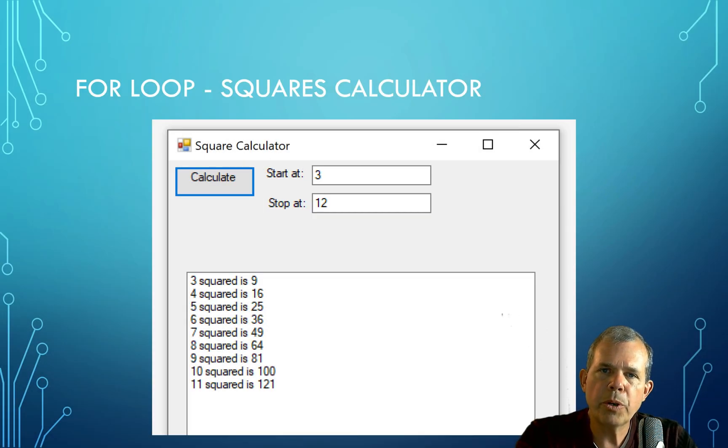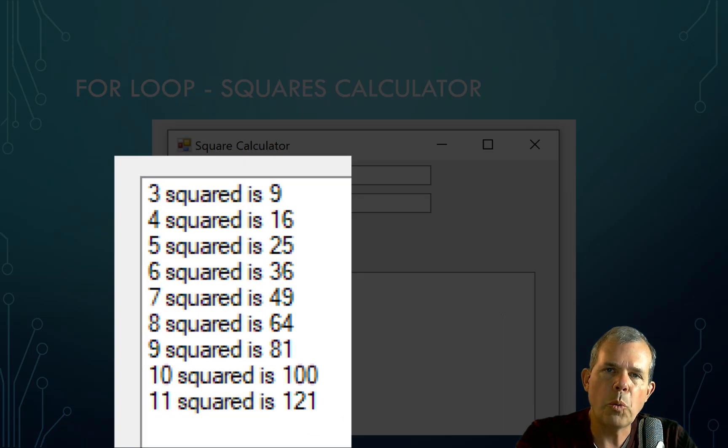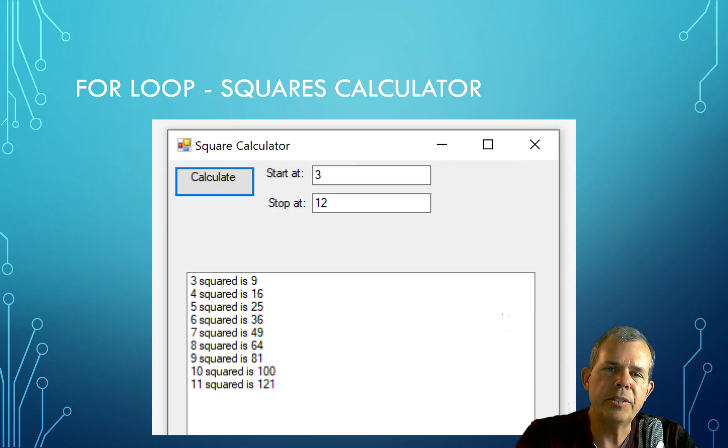And for each of those numbers, we're going to count one by one until we get to the upper limit. And for each answer, we're going to calculate the square or the power of two for each of these integers.